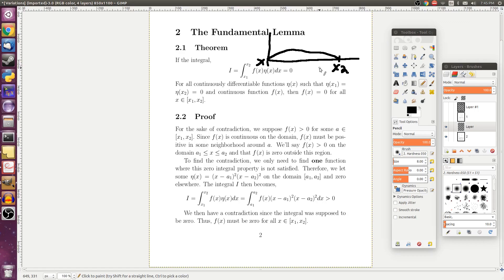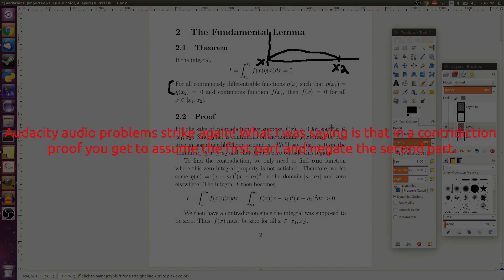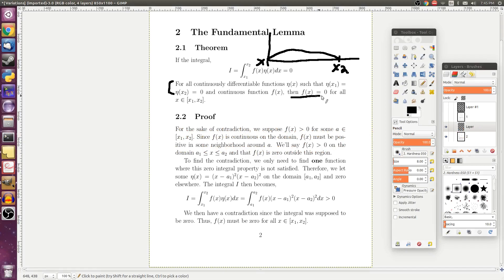So for this proof, we're going to use contradiction. So if you want to prove something by contradiction, you get the first part to negate the second part. So if you negate the second part, you would suppose instead that f of x is not zero.